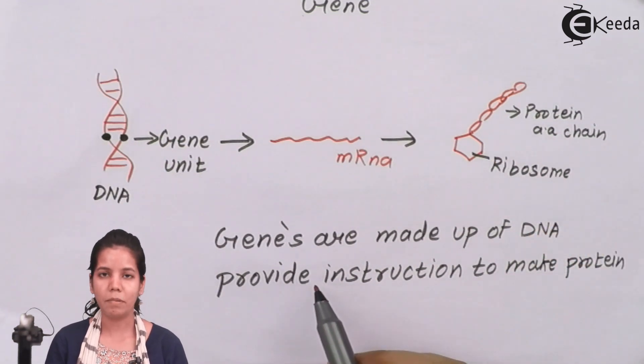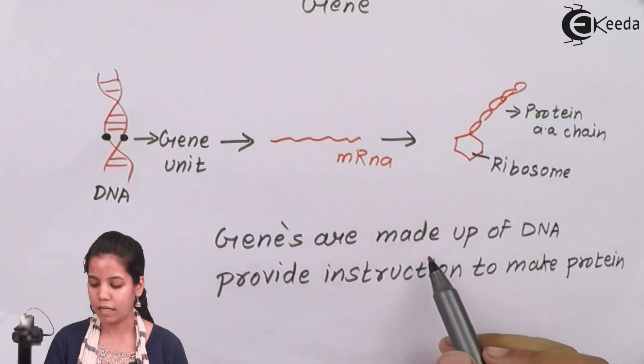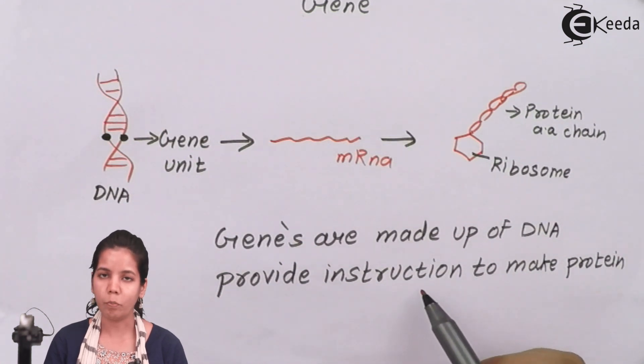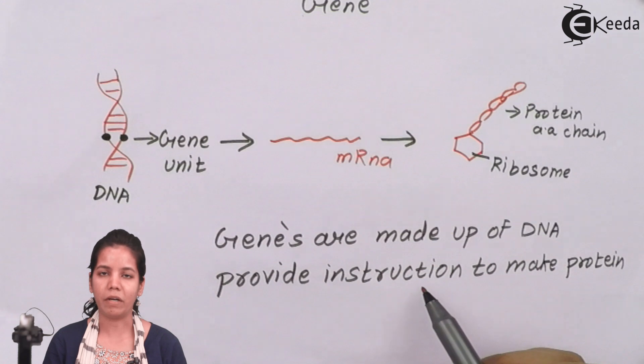So genes in simple language are genes are made up of DNA, you can say that provide instructions to make proteins, or genes are present on DNA that help to make protein molecules or which determine your traits.